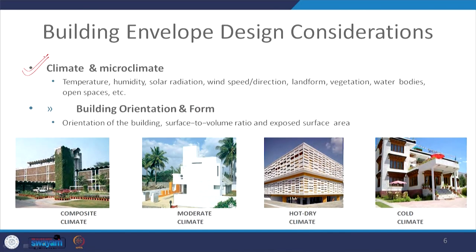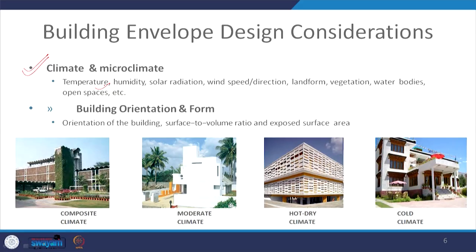Within the building envelope, several factors need to be considered during design. The first is climatic study — understanding what the climate brings and how buildings can deal with it. We need to know about temperature ranges, humidity, solar radiation, wind speed and direction, landform, vegetation, water bodies, and open spaces as part of the climate and microclimate study.